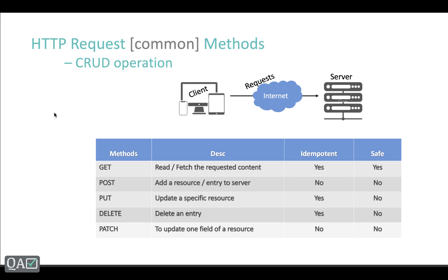What about POST? Say on Twitter you tweet 'I am feeling happy today' and click Post — you get one entry. If you click the same message again, it creates another entry. Every time you tweet the same message you get another new entry, so you will end up with multiple tweets. That's why POST is not idempotent — the server responds differently each time you make the same request.